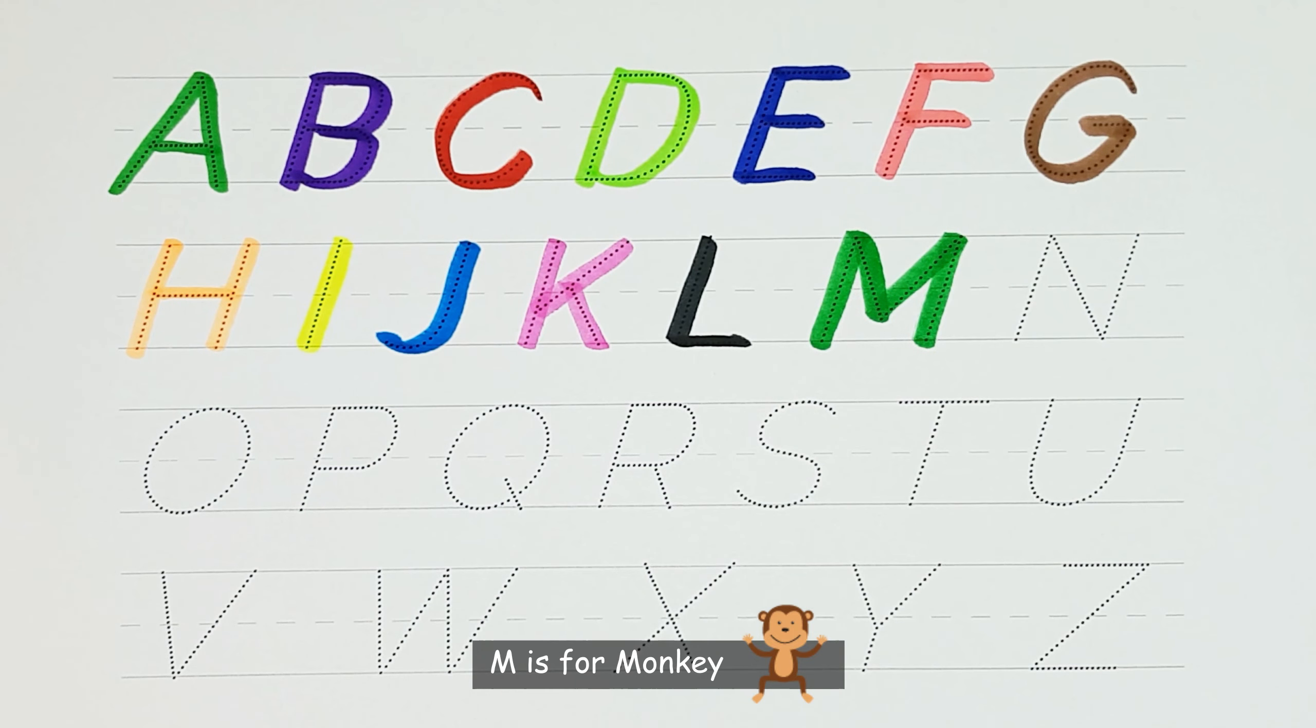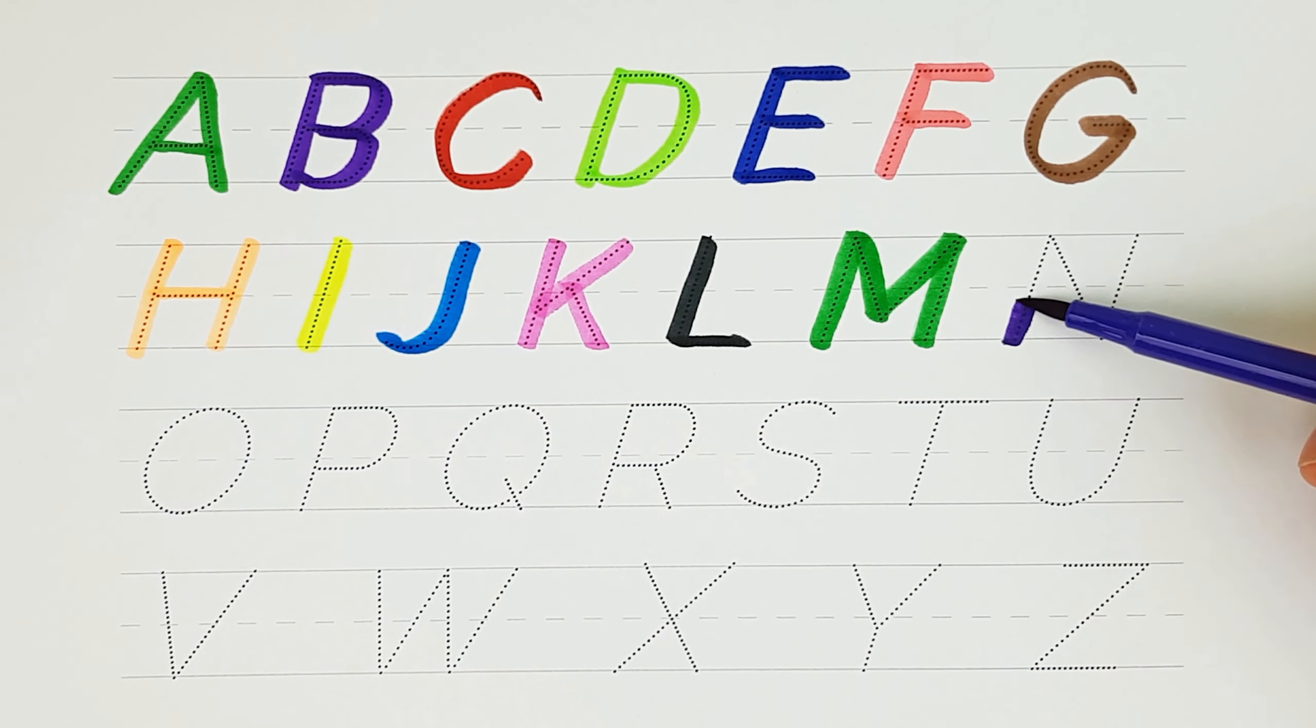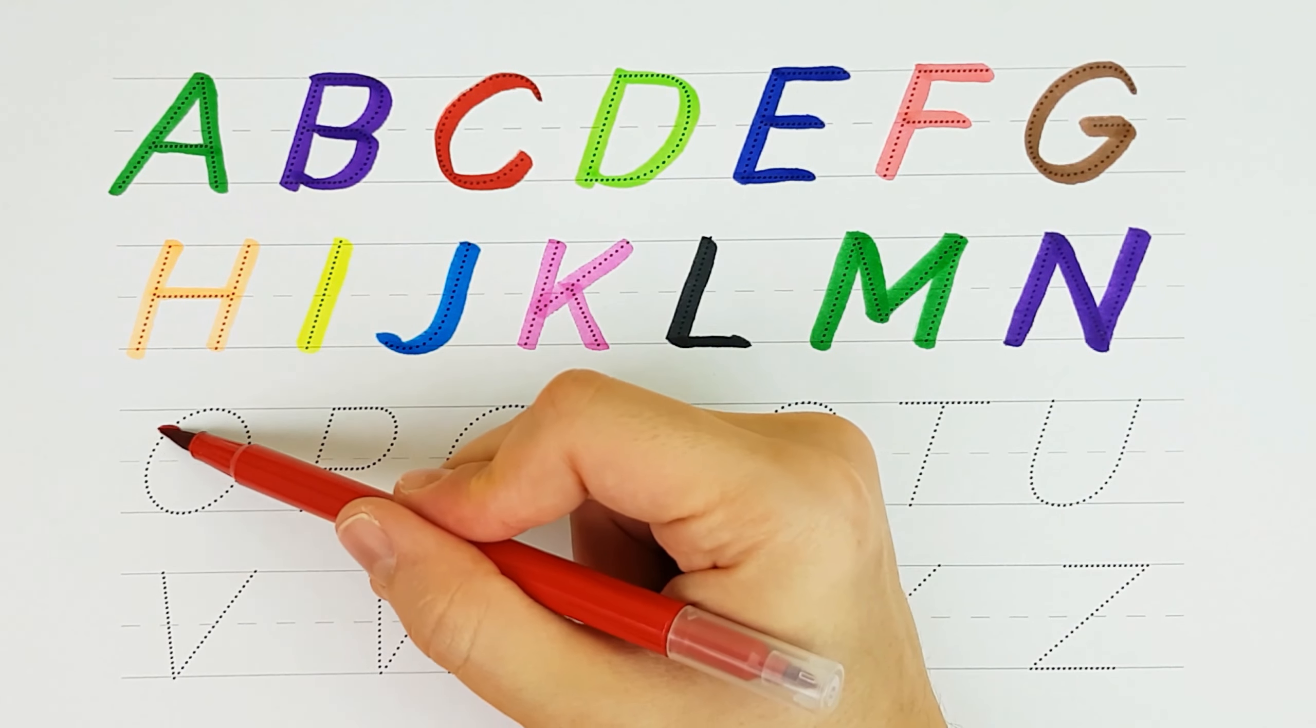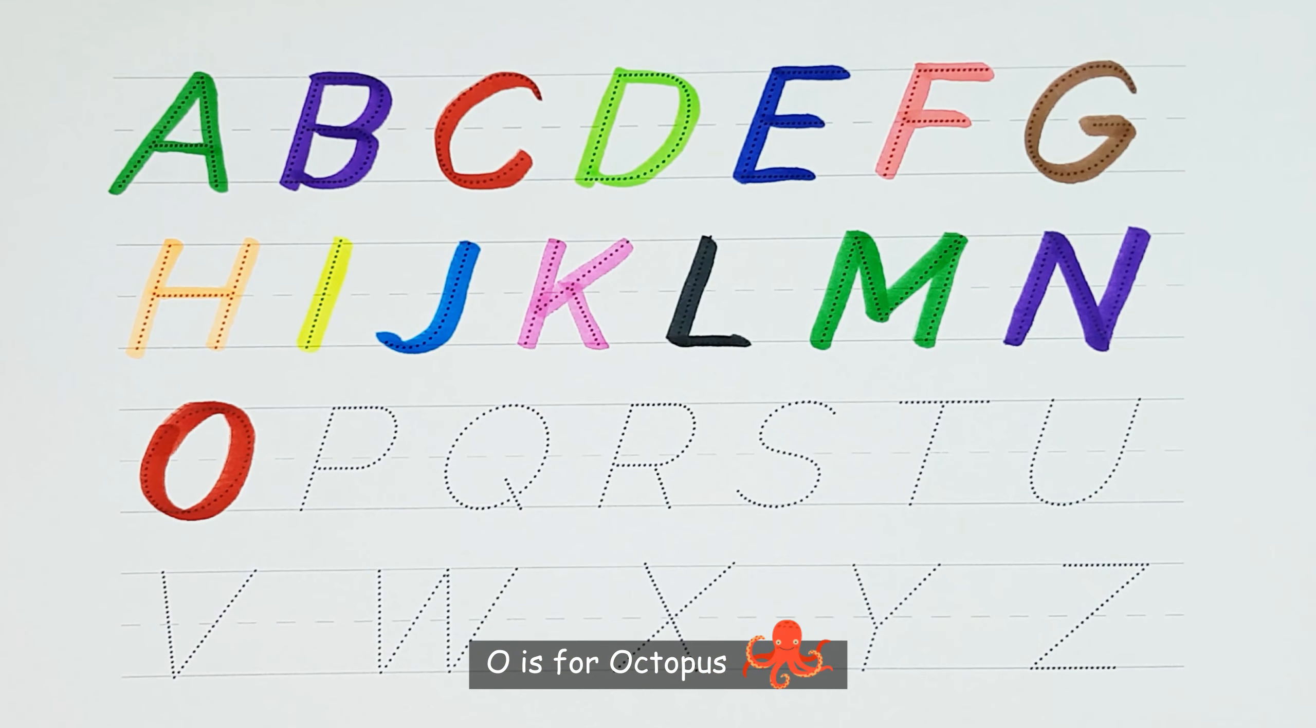M. M is for Monkey. N. N is for Napoleon Fish. O. O is for Octopus.